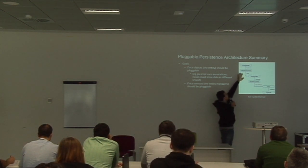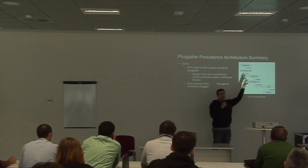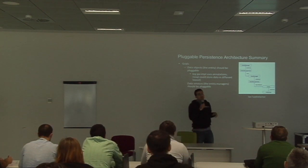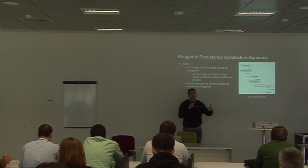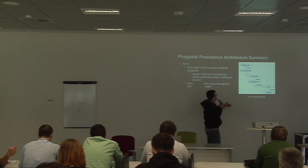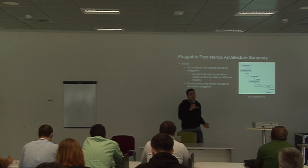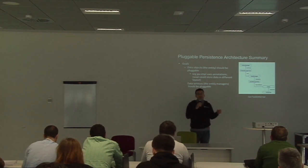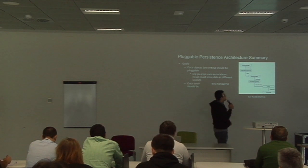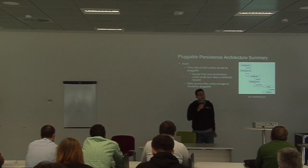We have a new class, the Entity Manager. This class is what you want to talk to when you want to do something with your data inside your engine — it's the class you're interested in working with. Then we have another class, the Data Manager. This class does all the CRUD operations with the database: insert, update, delete of data. And finally we have the Entity class, which is now a POJO — it just holds the data, and you store it on the database.